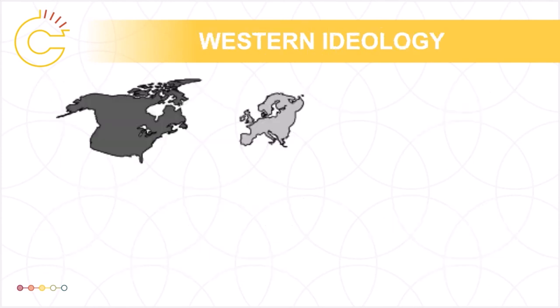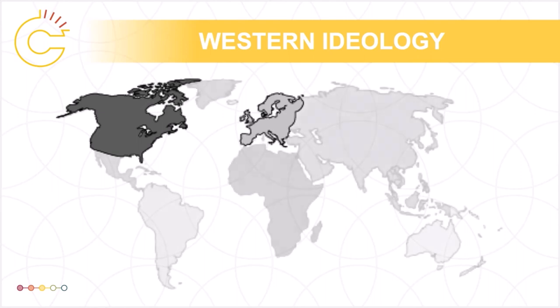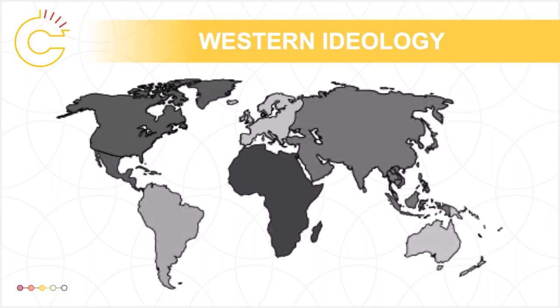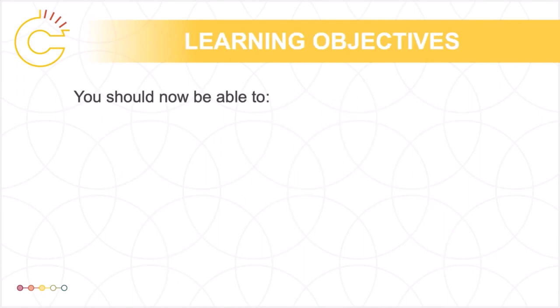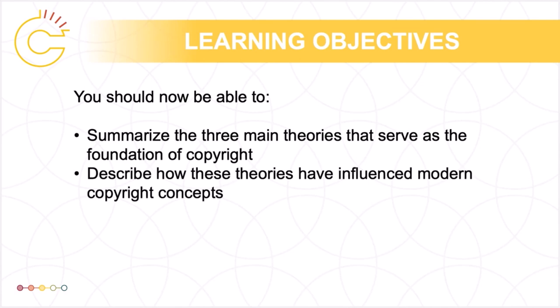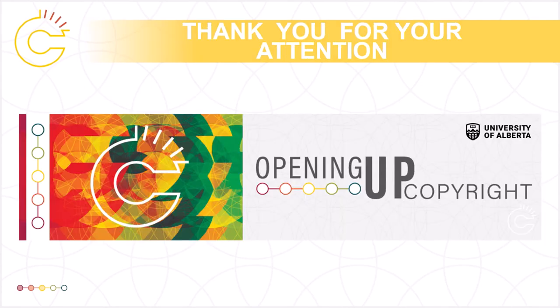Finally, it is important to recognize that all major justificatory theories of copyright are from European authors and reflect that copyright itself is a Western concept. You should now be able to summarize the three main theories that serve as the foundations for copyright and describe how these theories have influenced modern copyright concepts. This has been the University of Alberta's Opening Up Copyright module on Theoretical Foundations for Copyright. Thank you for your attention.